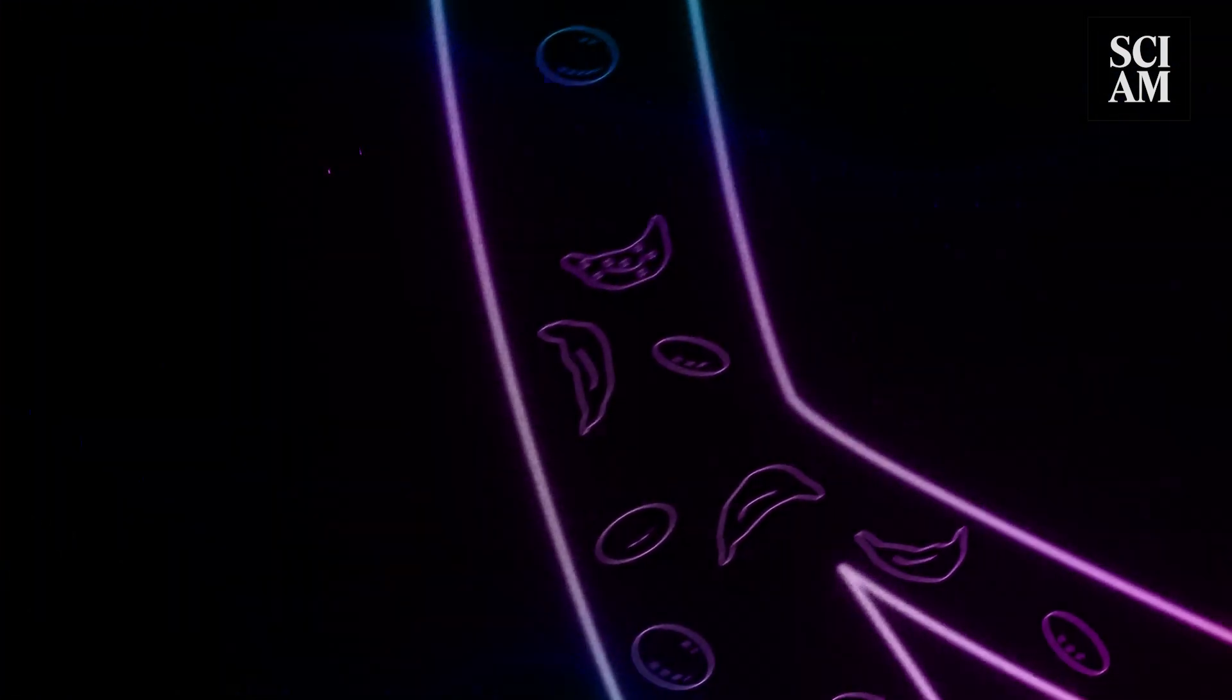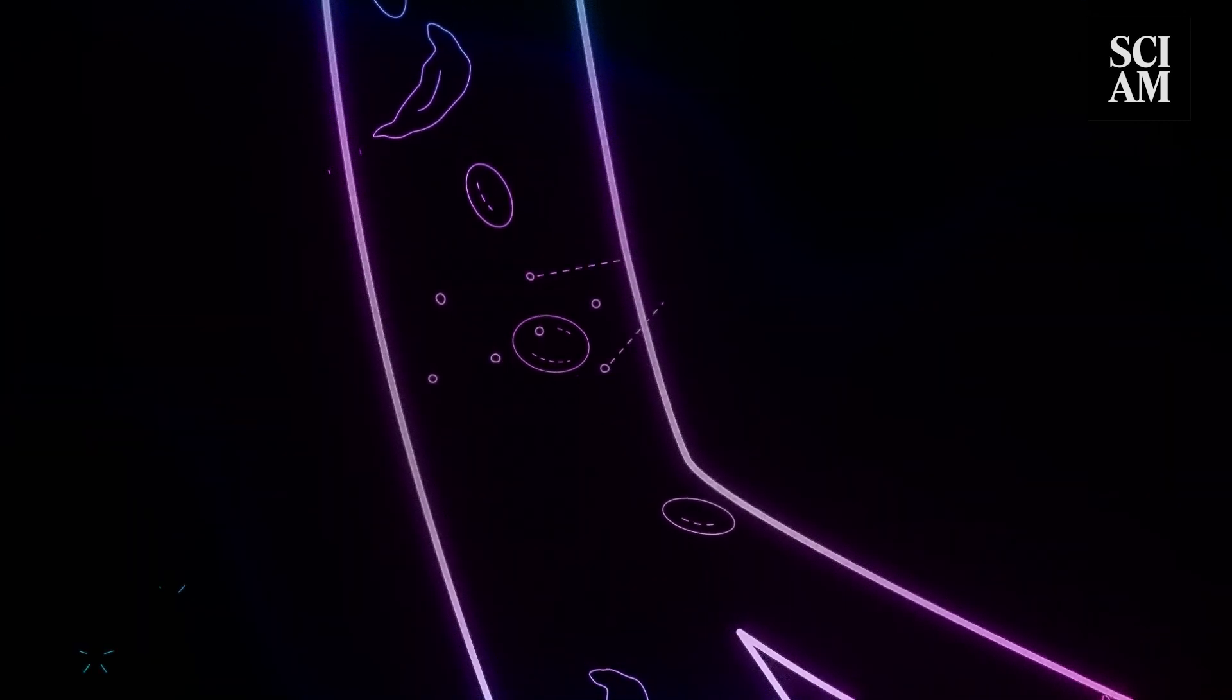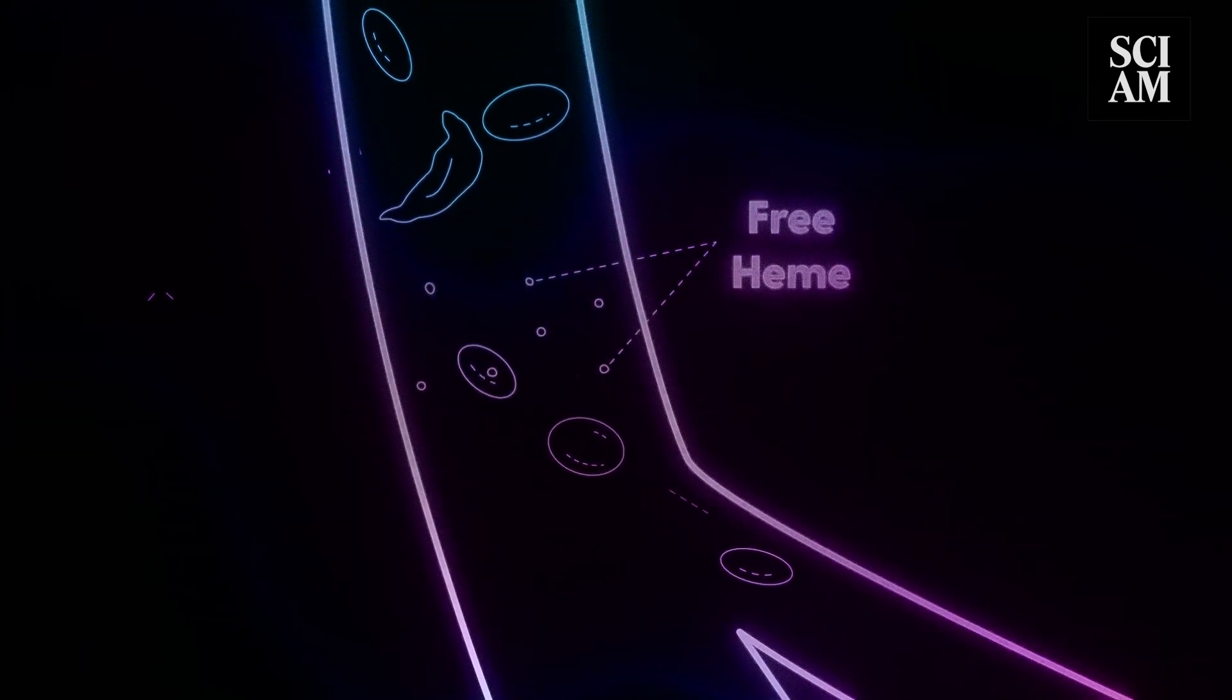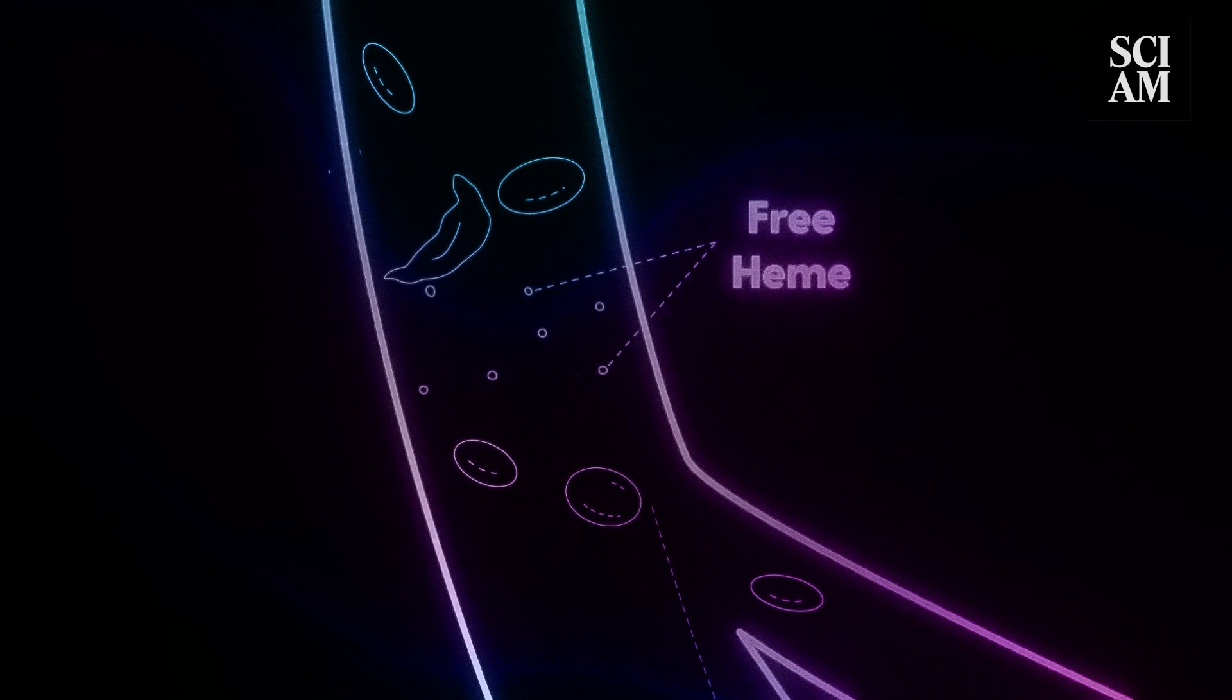The sickled cells can also easily burst, releasing the cell's contents in the bloodstream. One of the components of hemoglobin, called heme, can trigger an immune response once it's outside the cell.